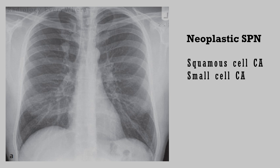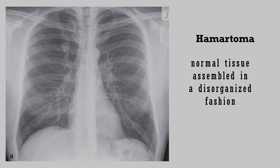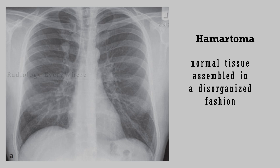Our third differential diagnosis of solitary pulmonary nodule is hamartoma. Hamartomas are composed of normal tissues assembled in a disorganized fashion. They are the most common benign tumor of the lung. Radiographically, these are well-defined solitary masses usually less than 4 cm in diameter. You can see focal macroscopic fat in addition to